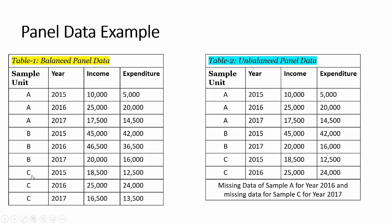For the same sample unit we have different time periods. For sample unit A, we take the income and expenditure data for the years 2015, 2016, and 2017. Similarly, for sample unit B, we have taken this data for the years 2015 to 2017. For sample unit C, we have also taken this data for the years 2015 to 2017.